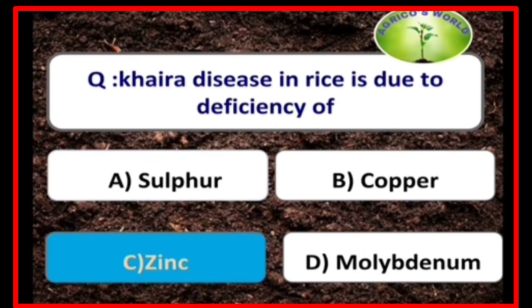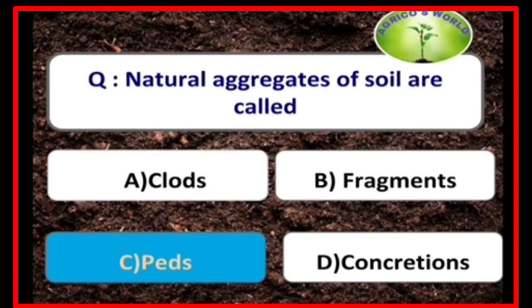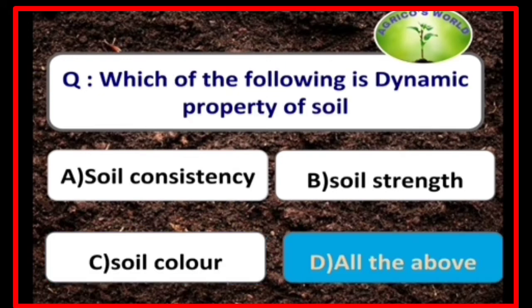Khaira disease in rice is due to the deficiency of zinc, and it was discovered by Vyal Nene. Natural aggregates of soil are called peds.